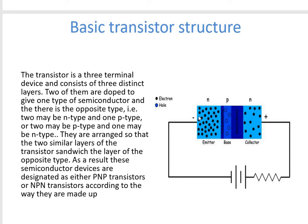Electrons are the majority charge carriers in the N region and holes are the majority carriers in the P region. The first terminal is known as the emitter, the second as the base, and the third as the collector region. This is a three-layered structure with two similar layers and an opposite layer in between them.